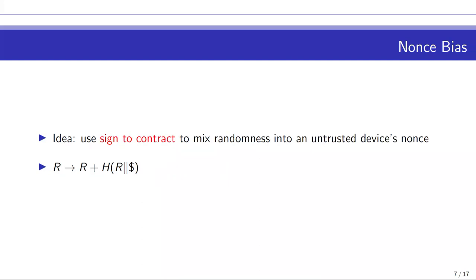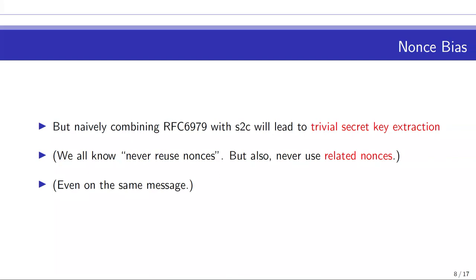There's a way to get verifiability using a technique called sign-to-contract. You — the user of your hardware wallet — provide some randomness, hand it to the hardware wallet, and the hardware wallet mixes this randomness into its nonce. This is great: if you can produce uniform randomness, or even if the hardware wallet can, the result will be uniform. In particular, if the hardware wallet is trying to undermine you in some way, you will undermine the undermining. But here we run into the first of many implementation difficulties with trying to do cool, simple ideas.